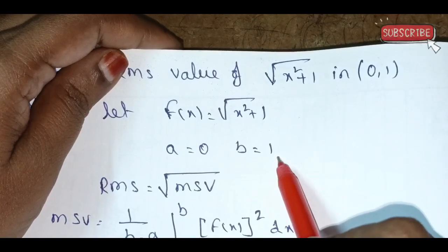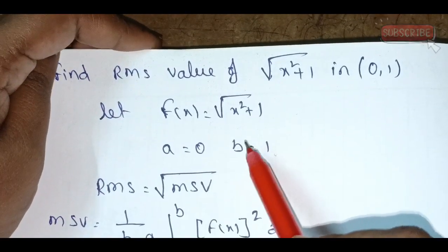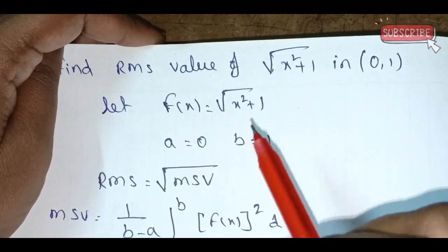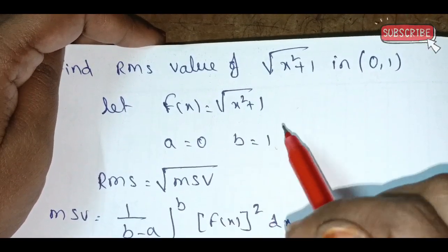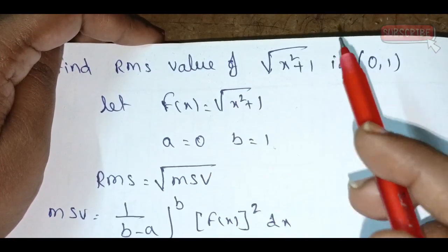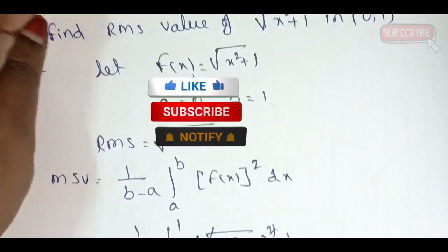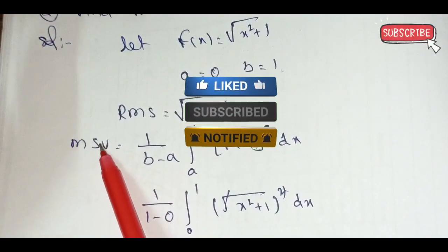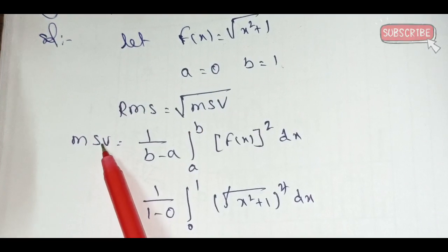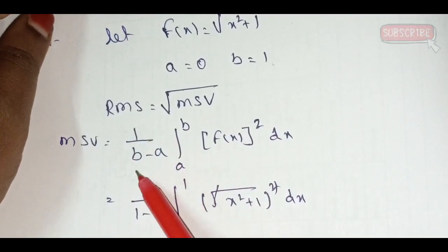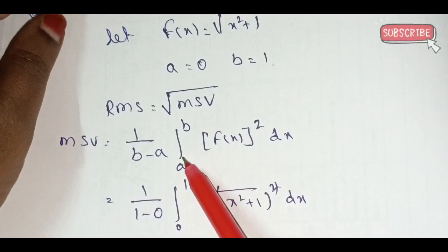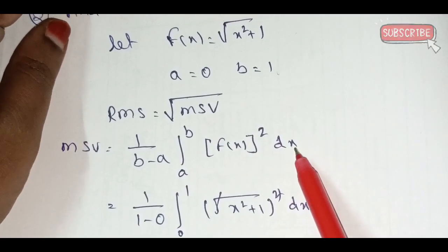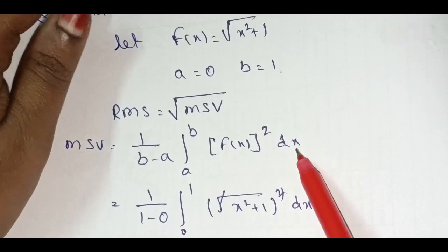I will find out the value from 0 to 1. Now the mean square value — first I will find out the MSV and then apply the root. The formula is 1 by (b minus a), integral of [f(x)]² dx.